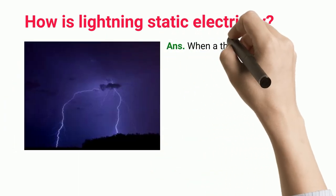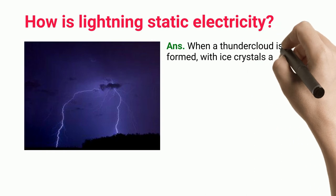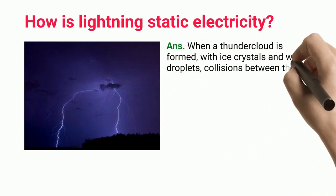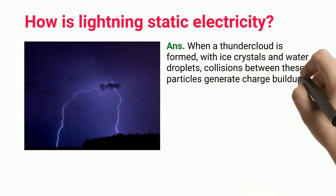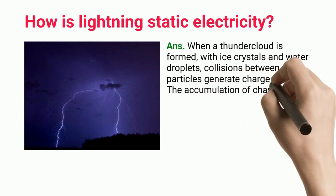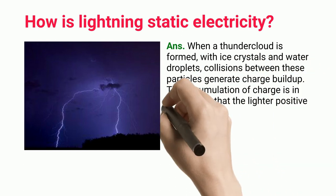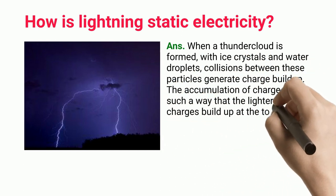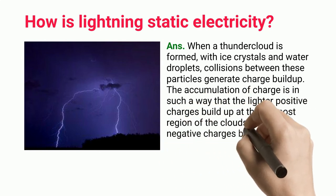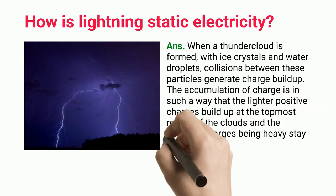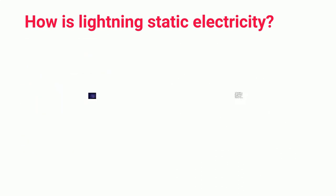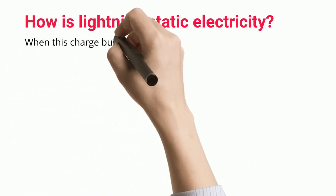When a thunder cloud is formed with ice crystals and water droplets, collisions between these particles generate charge buildup. The accumulation of charge is such that the lighter positive charges build up at the topmost region of the clouds, and the negative charges, being heavy, stay at the bottom portion of the clouds.